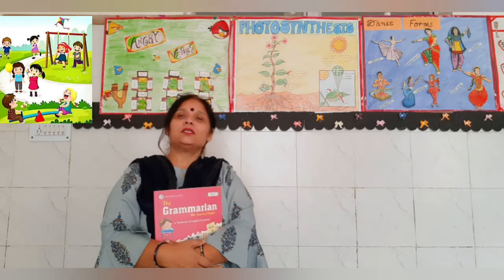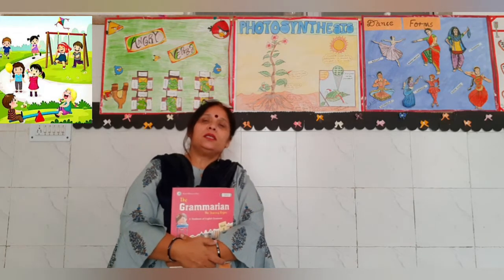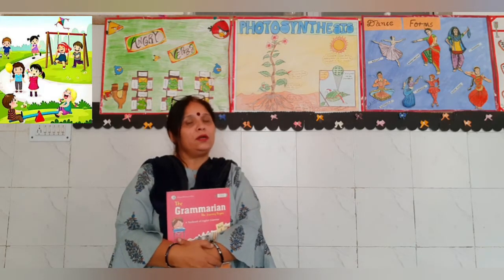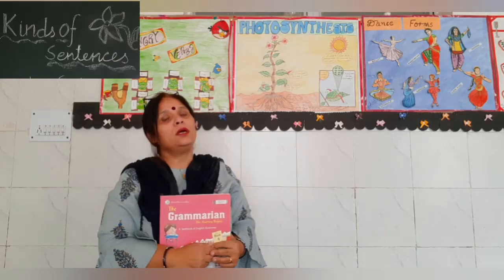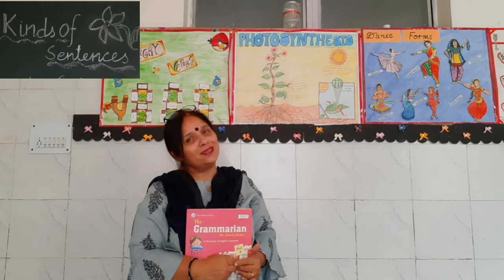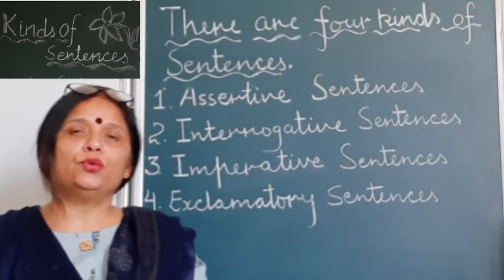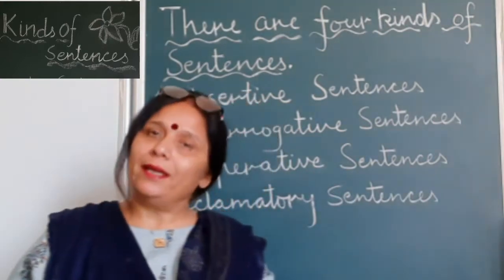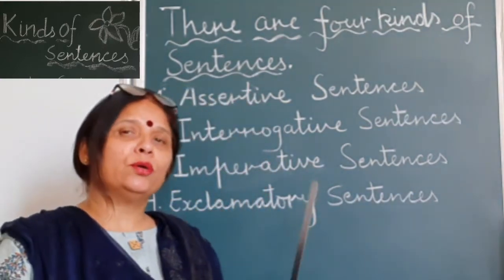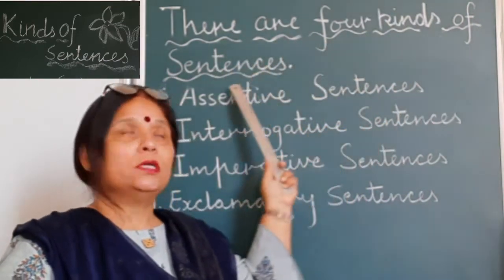Yesterday we started the topic kinds of the sentences. Assertive sentences were defined in detail. Now let's move towards the board to learn more about the other kinds of the sentences. Yesterday I taught you that there are four kinds of the sentences. Let's have a recap and look at the board.